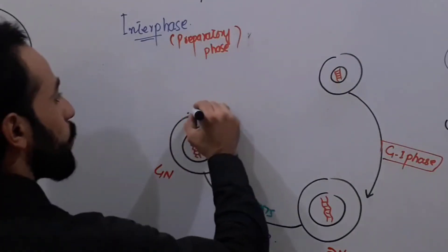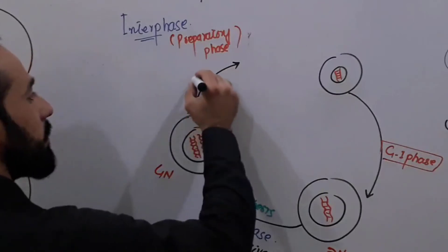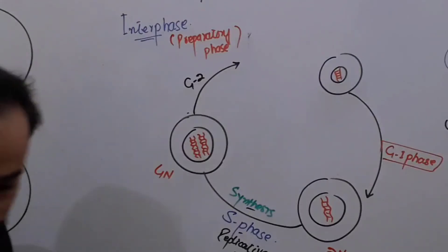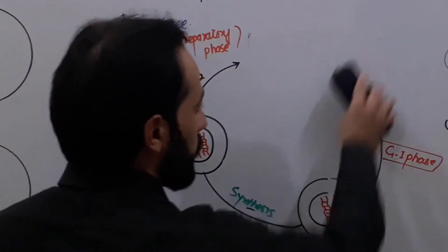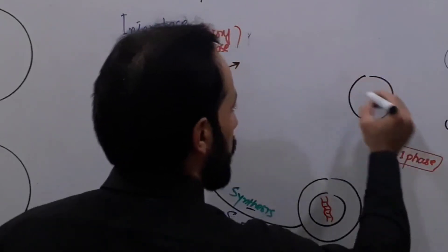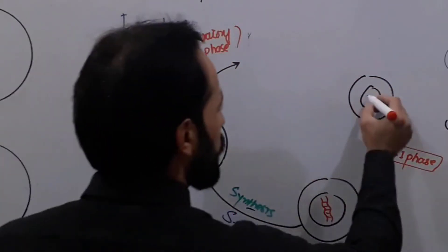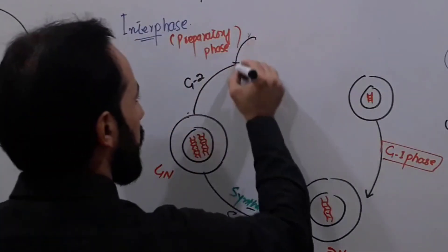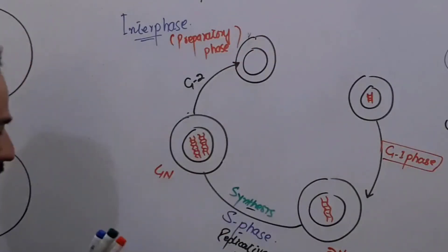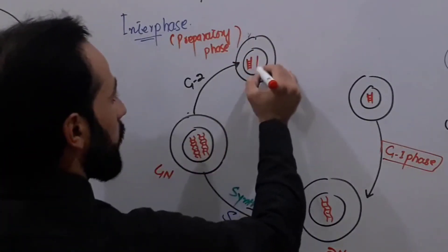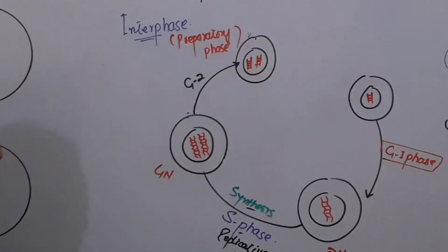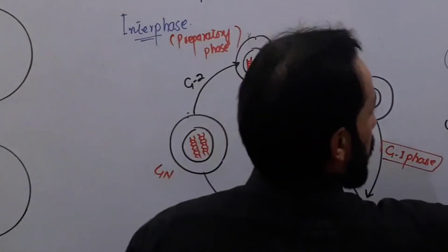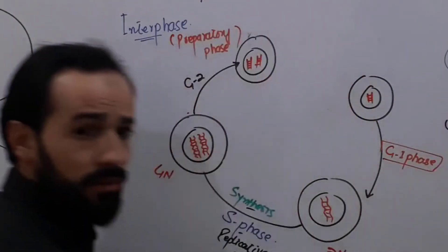After S phase, the cell enters G2 phase. During G2 phase, the cell also grows a little further in size. At this point, the cell contains double DNA. After G2 phase completes, the cell enters the Mitotic phase — the Division phase.